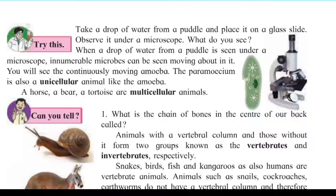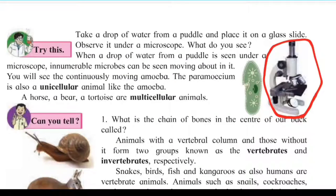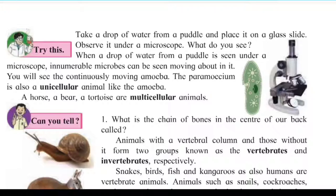For example, amoeba and paramecium are unicellular animals. Animals that have many cells in their body are known as multicellular animals. Examples include humans, dogs, cats, horses, bears, tortoises, snails, and ants — these are all multicellular animals.